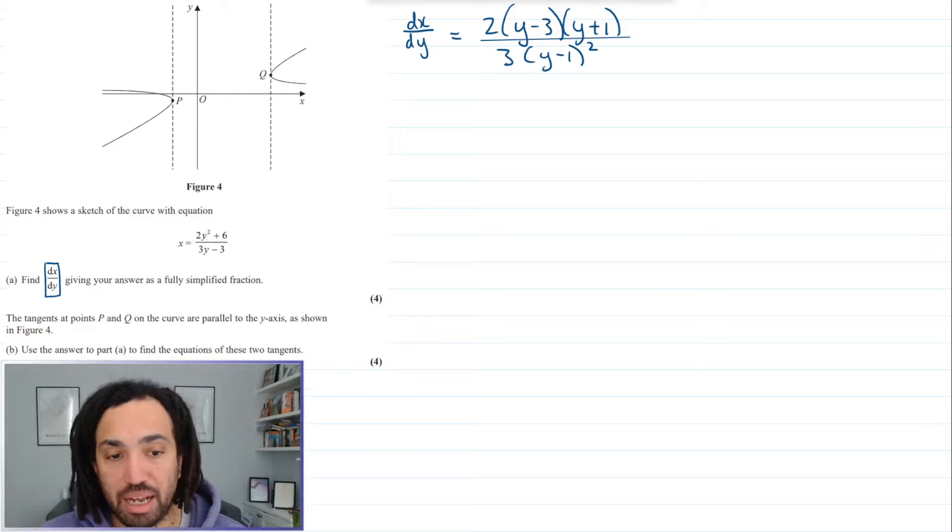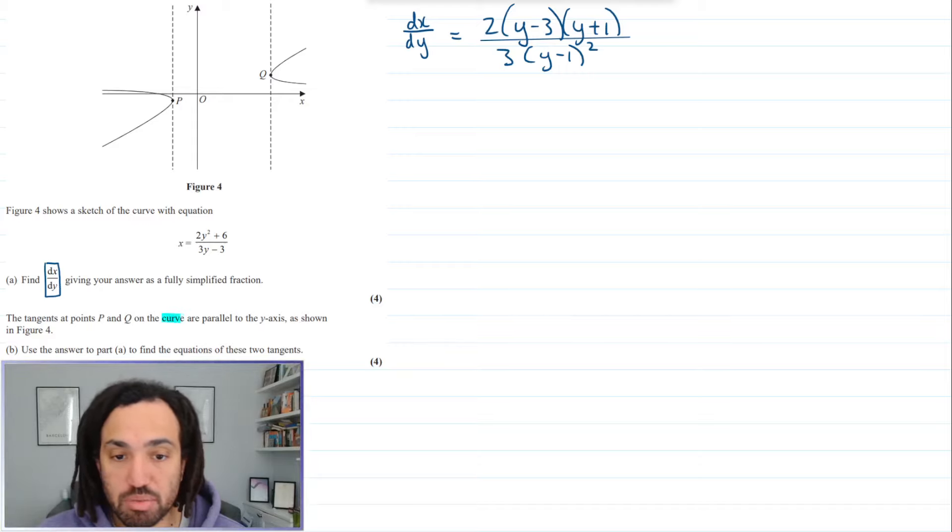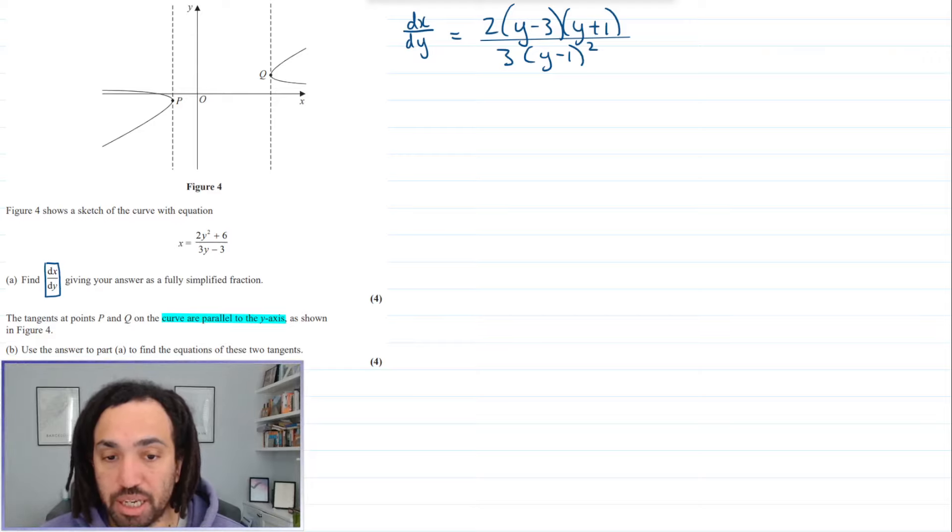Back. The tangents at the points p and q on the curve are parallel to the y axis. And this is why I've chosen this question. Because lots of people make this mistake when we talk about curves being parallel to the y axis. Use your answer to find the equation of these two tangents.